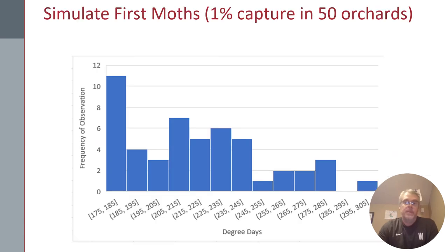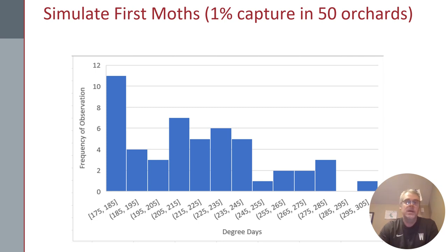Trap catch data is very difficult for estimating the first catch of moths. In a simulation of 50 orchards, if we capture 1% of the moths, in only about 25% of cases is the first moth captured when it actually emerges. We see a long tail to the distribution — in one simulated orchard, the first moth was not even captured until 300 degree days. These simulations show what could happen if the phenology model is right; all of these delays in catching your first moth are just based on sampling error.